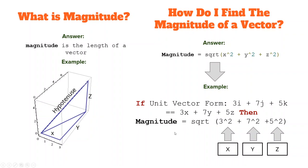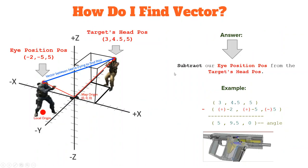How do I find vector? Our vector is we subtract our eye position from our target's head position. So here is our local player's eye position, and on the other side is our target's head position, which is our enemy.